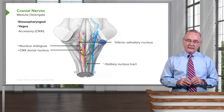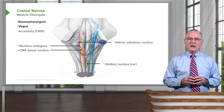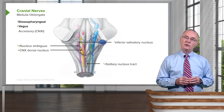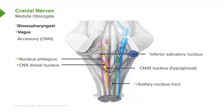Another cranial nerve nucleus in the medulla, more inferior in the illustration, is the accessory nerve nucleus associated with cranial nerve number eleven. Lastly, we have the hypoglossal nerve nucleus, associated with cranial nerve number twelve.